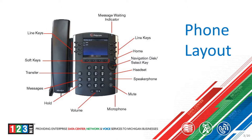Below that is your mute key. If you are on a call and you wish to mute yourself so that the other caller cannot hear you, you will press that button and it will light up red. Your volume keys are next. When you are on a call, these buttons when pressed will either turn the call up or turn the call down.